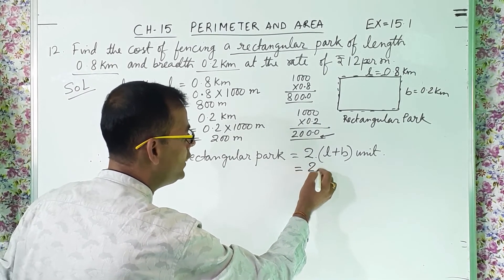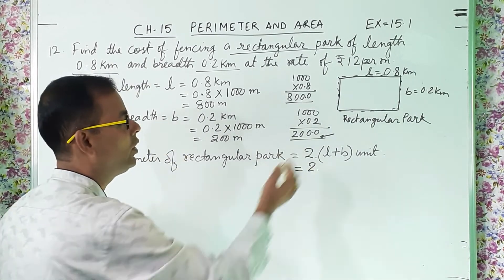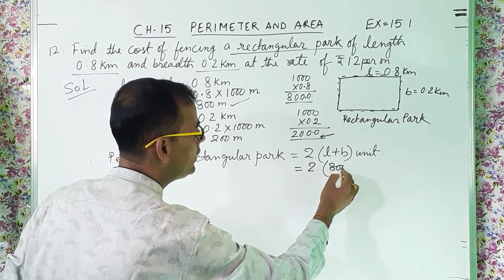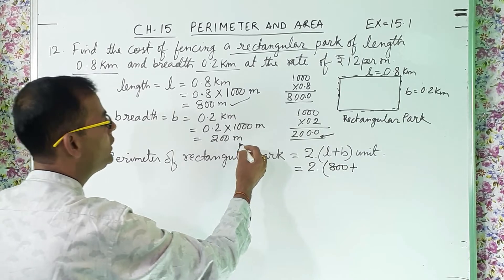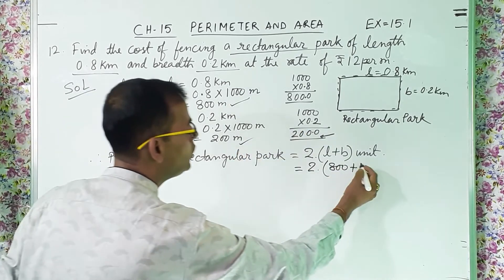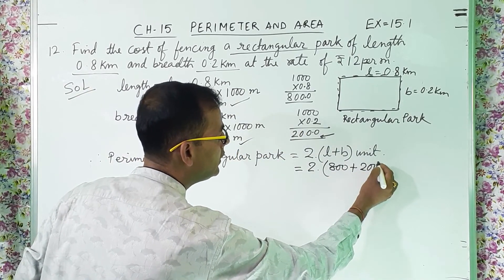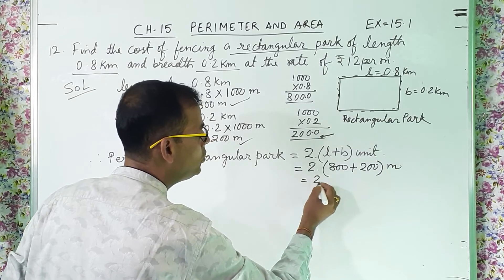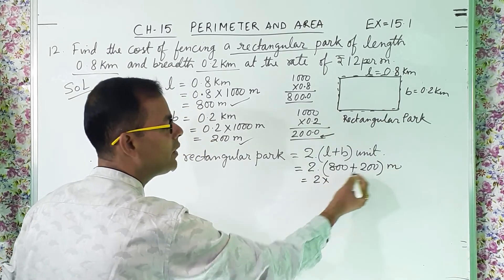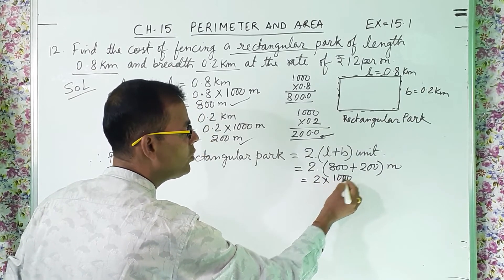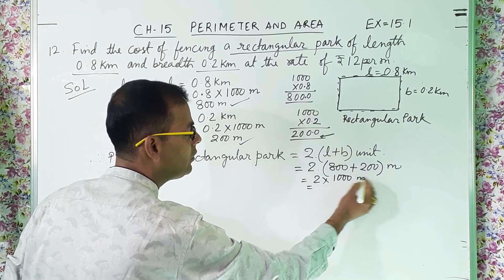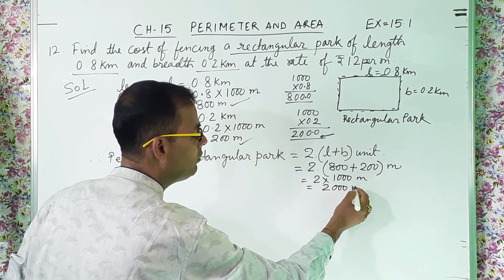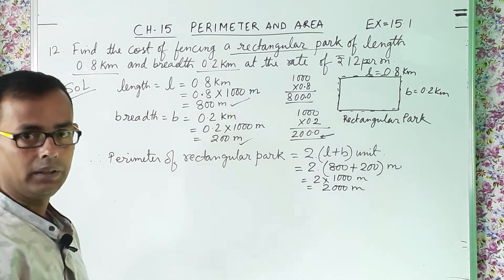So 2 into — length is 800 meters plus breadth is 200 meters — equals 2 into 1000 meters, which gives 2000 meters. That is the perimeter of the rectangular park.